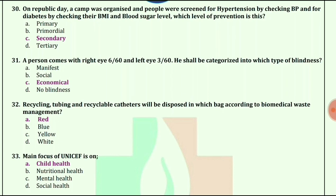A person comes with right eye 6/60 and left eye 3/60. He shall be categorized into which type of blindness? The answer is economical blindness.